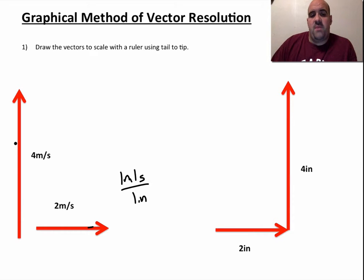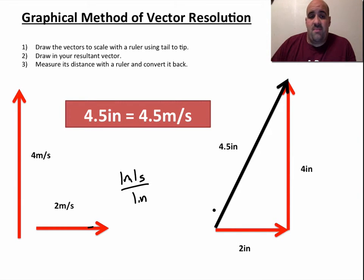Then you would draw 4 meters per second as 4 inches, and you can use tail-to-tip or parallelogram, and you basically have a resultant here. You can measure the distance of it with a ruler. If that ruler turns out to be 4.5 inches long, then you know it's 4.5 meters per second. You can use a protractor to measure this angle.